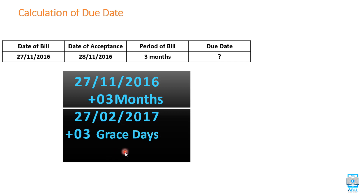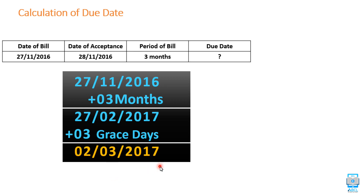We still have to add 3 grace days, but writing 30th February would be wrong, because February has a maximum of 28 or 29 days depending on whether it is a leap year or non-leap year. Since 2017 is a non-leap year, February has 28 days. Adding 1 grace day gives 28th February, but we still have 2 more grace days, so the final answer becomes 2nd March 2017.